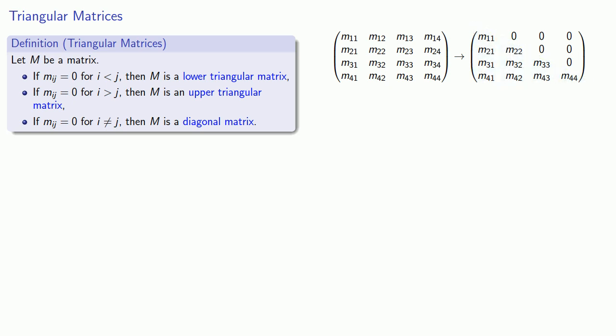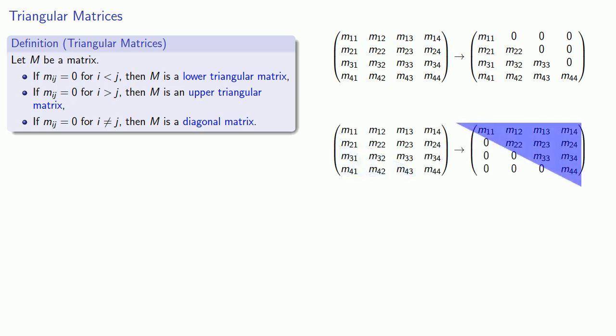Similarly, we can define an upper triangular matrix where the entries are 0 if i is greater than j. And so in this matrix, all of these entries are going to be 0 and the non-zero entries are in this upper triangle of numbers.